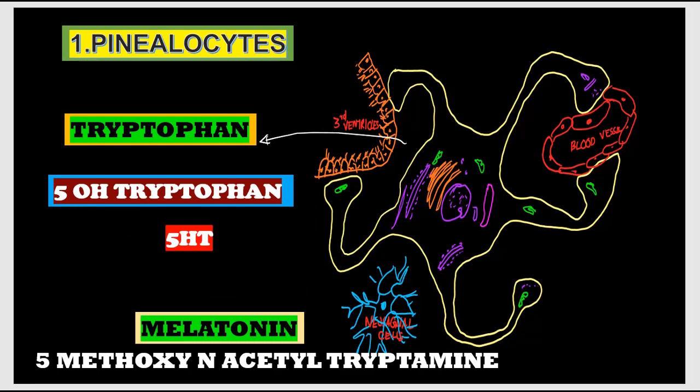Melatonin is synthesized from the amino acid tryptophan. Chemically, melatonin is 5-methoxytryptamine. Tryptophan is first converted to 5-hydroxytryptophan by hydroxylases, then to 5-hydroxytryptamine (5-HT) by decarboxylase. This 5-HT is then converted to melatonin by first acetylation and then methylation. Melatonin synthesis is increased or decreased by the effect of light.